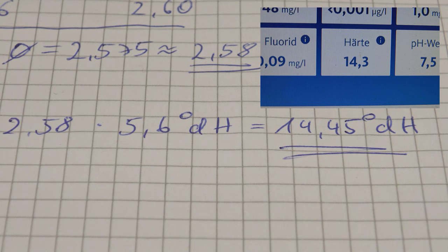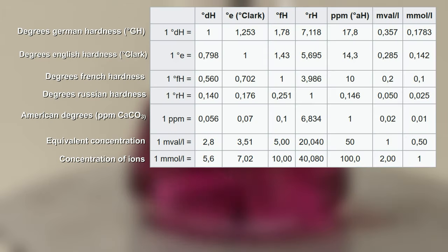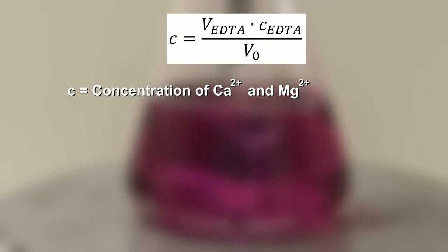The unit degrees German hardness is only used in Germany and very old, which is why there are a lot of different units for water hardness. From the scientific perspective, the correct unit would be millimoles per liter, so 14.45 degrees German hardness would be 2.58 millimoles of alkali ions.